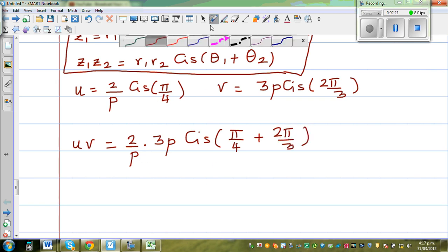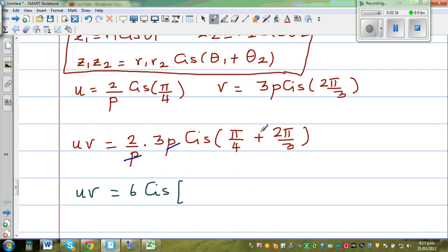Okay so the p and p get cancelled. So what is left over is uv equals 6 cis... so let us simplify this.